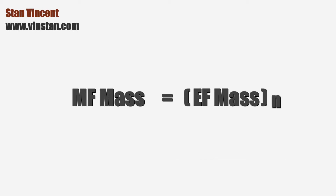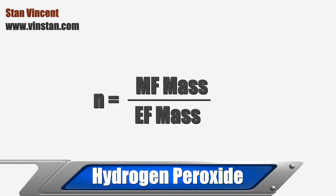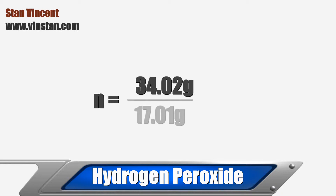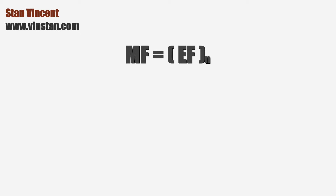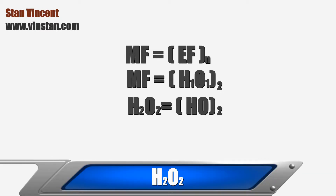Let's take hydrogen peroxide as an example. The molar mass is 34.02 grams per mole. The empirical formula mass is 17.01 grams. So the value of n is equal to 2. If the empirical formula of hydrogen peroxide is H1O1, then the molecular formula of hydrogen peroxide is H2O2.